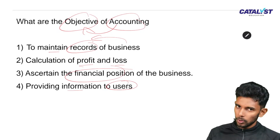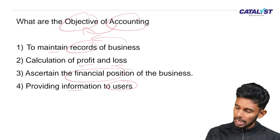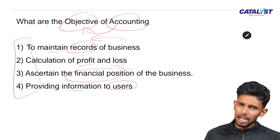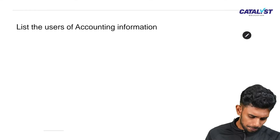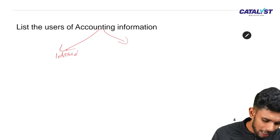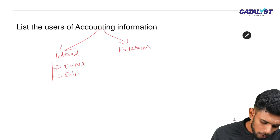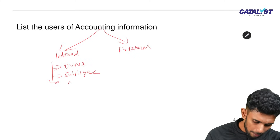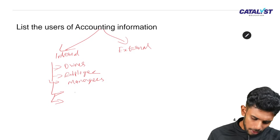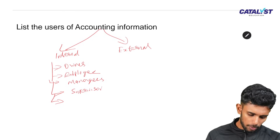If you have a business, you need to provide information to users — owners, managers, investors, creditors, bankers. We need to provide information and assist management. Accounting users are classified as internal and external. Internal users are within the business: employees, managers — sales manager, purchase manager, marketing manager, production manager — and supervisors. These are all internal users.